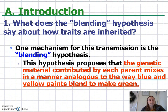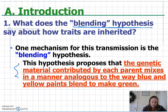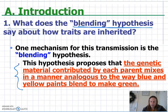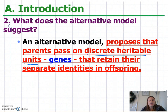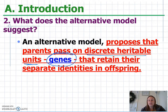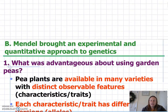Originally, scientists believed in the blending hypothesis, where the genetic material contributed by each parent mixes — kind of how paint mixes. For example, if I had brown eyes from mom and blue eyes from dad, I would get blue-brown eyes in the offspring. However, Mendel proposed an alternative model where he said that parents pass on discrete heritable units that retain their separate identities in offspring. We currently call those discrete heritable units genes, though Mendel had minimal knowledge of genes, DNA, or chromosomes — but he knew it wasn't the blending hypothesis.